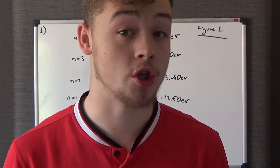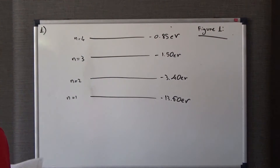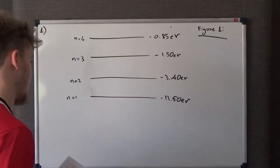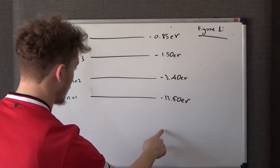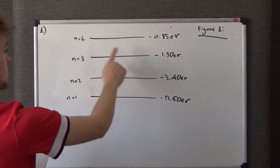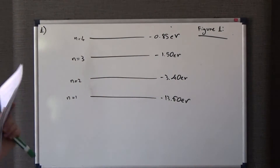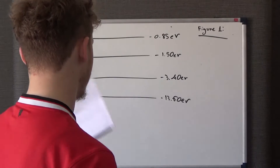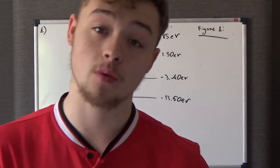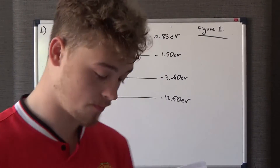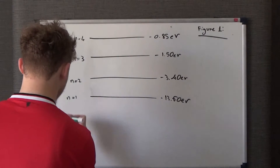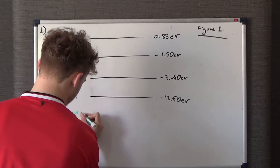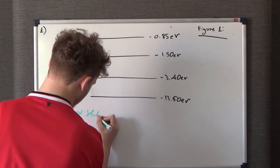In this video we'll be looking at question number one. What's drawn behind me is essentially what you're given in Figure 1: n=1, n=2, n=3, and n=4, with the corresponding energy levels at each state. n=1, which is also known as the ground state — don't forget that.